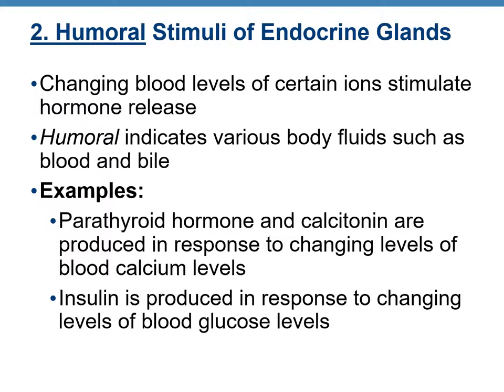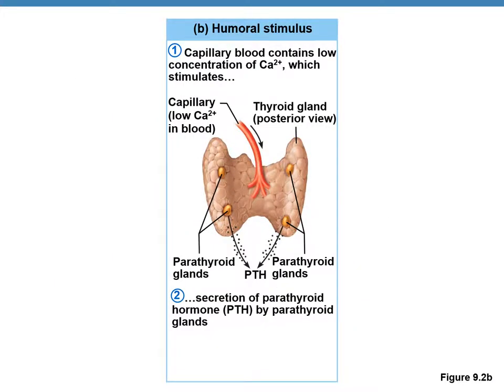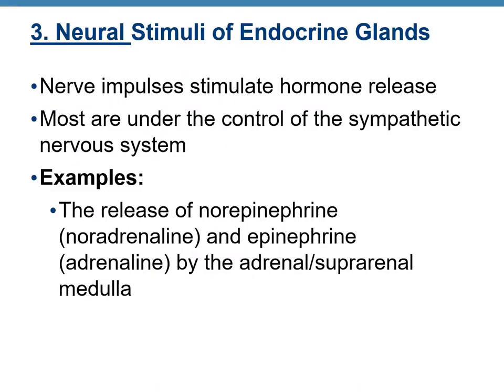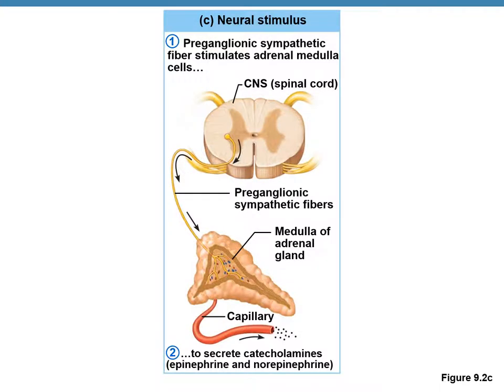Another example of humoral stimulus is how insulin is secreted from the pancreas in response to changing blood glucose levels. This figure shows humoral stimulus from increasing or decreasing calcium levels in blood. The third stimulus is neural — nerve impulses control hormone secretion, most of which is controlled by the sympathetic nervous system. An example is the secretion of adrenaline and noradrenaline by the adrenal medulla. This figure shows neural stimulus.